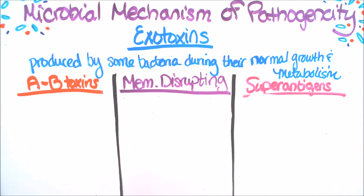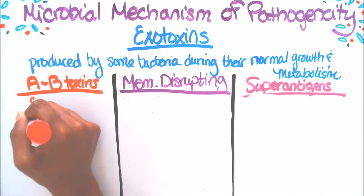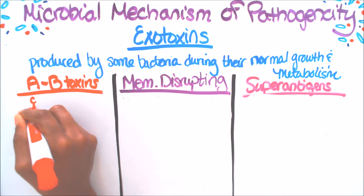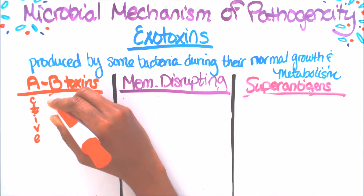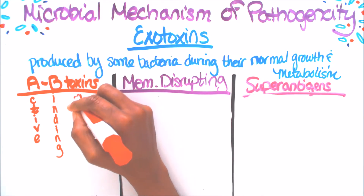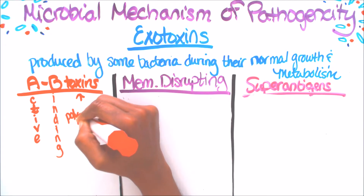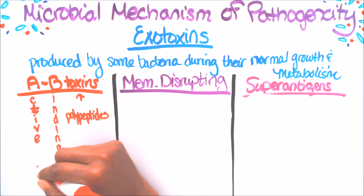We have to remember the three types of exotoxins: AB toxins, membrane disrupting toxins, and super antigens. In the names they give us a hint. With AB toxins, A stands for active — the active component of the toxin — and B stands for binding component. These toxins are polypeptides, and the example is diphtheria toxin.